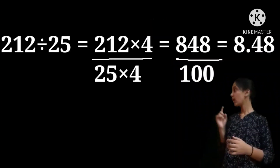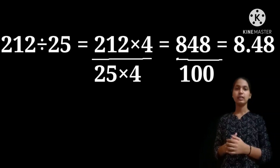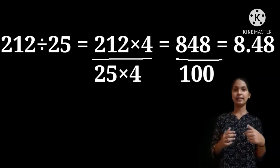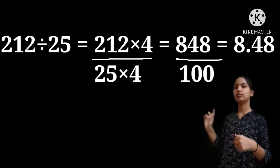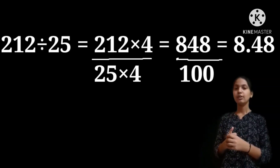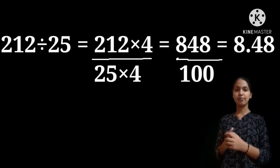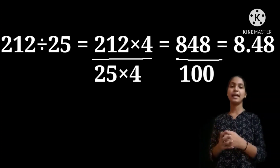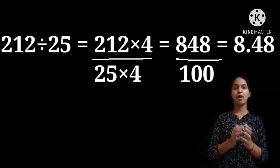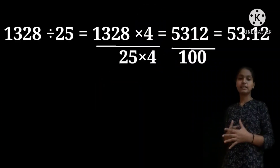Let us see about dividing any number by 25. Just look at the examples here. 212 divided by 25 — we should multiply 4 to the numerator and denominator. So 212 into 4, divided by 25 into 4. Let us multiply: 212 into 4 is 848, and 25 into 4 is 100. We should divide this. For 848 divided by 100, the answer is 8.48. It's very simple — in the denominator we have 100, and in the numerator we have 848. We should keep 2 digits before the decimal point. That is 8.48.